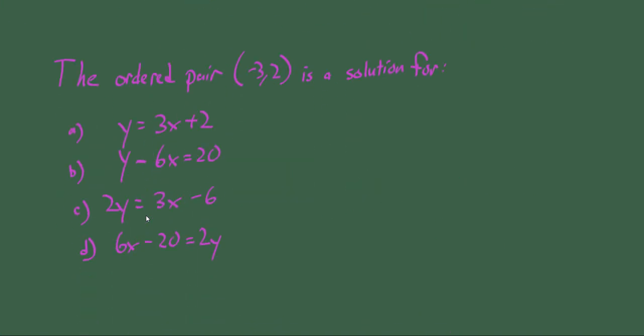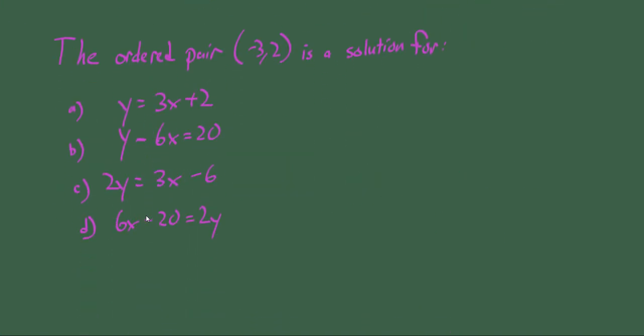Let's do something else here. Here's a multiple choice, which is weird to do in a video, but whatever. The ordered pair negative 3, 2 is a solution for, and we have these different choices, A, B, C, D. And for this, all we need to do, it's a little bit slow, but all we need to do is remember that they're always telling us x value and then y value. So we just put those x and y values in.